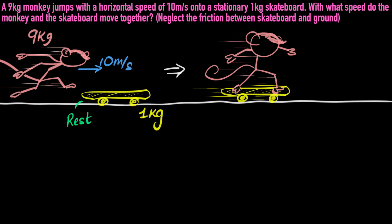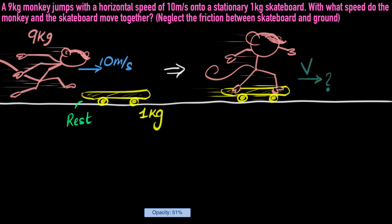Now what we need to find out — what do we have to calculate? With what speed do the monkey and the skateboard move together? So that means after jumping on that skateboard, we need to figure out what is the speed with which they move together. Their combined speed is what we need to calculate.